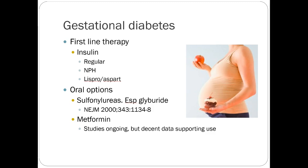Diabetes in pregnancy: first-line therapy is usually insulin — regular insulin, NPH, and lispro/aspart all have good evidence in pregnancy. The longer-acting insulins like Lantus do not have as strong evidence, but can still be used. For oral options, sulfonylureas — especially glyburide — have pretty good evidence. Metformin has decent data supporting its use as well, though not quite as strong as glyburide.